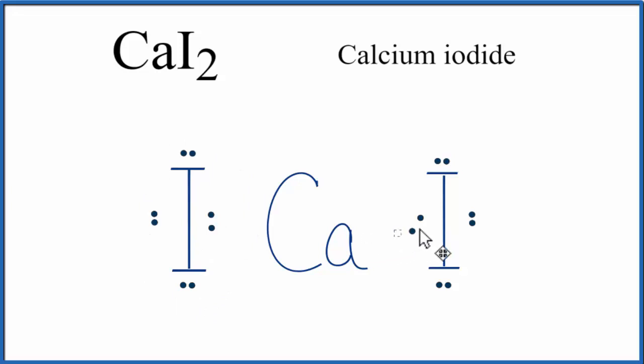The other electron comes over here to this iodine and completes its octet. Because the calcium lost two electrons, and electrons have a negative charge, the calcium lost two negative charges. It now has a 2 plus charge.